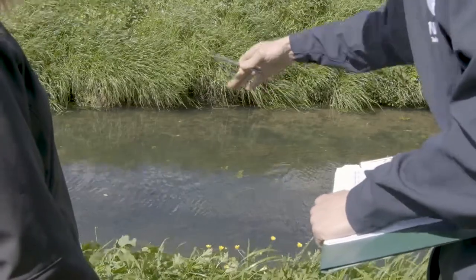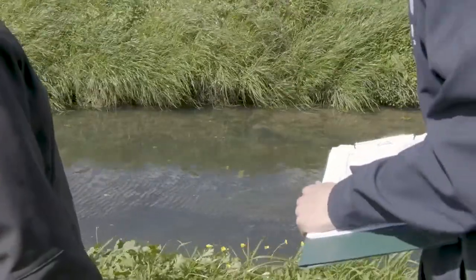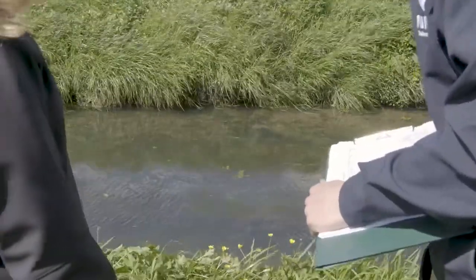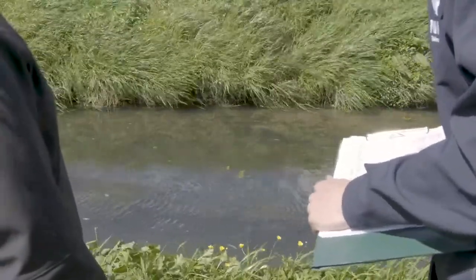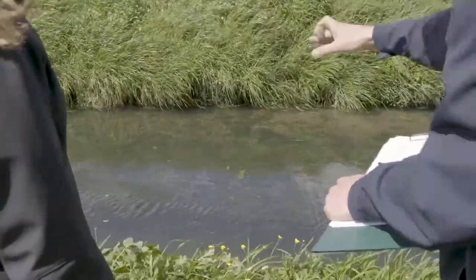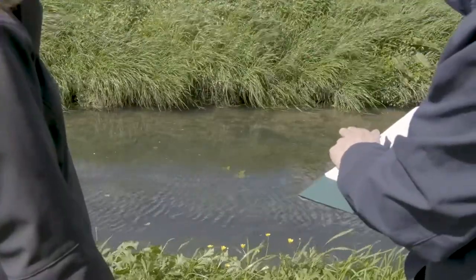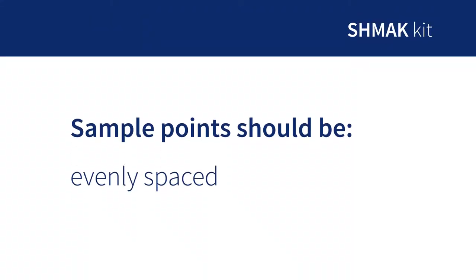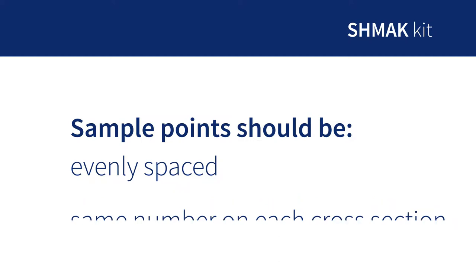If some of your stream is too deep to wade across, you don't need to set up bank to bank. Stop when the stream gets too deep. Just make sure that the sampling points are evenly spaced and you have the same number on each cross section.